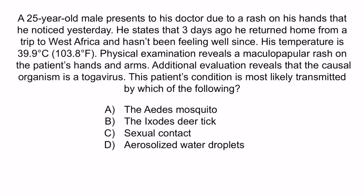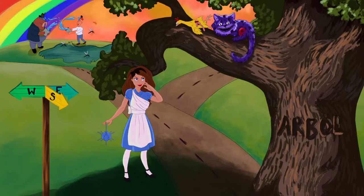Hopefully from the question stem you notice that this patient has a rash, a fever of 39.9 degrees Celsius, and is due to a togavirus. Collectively, these clues should have made you think of chikungunya virus — a togavirus which can cause arthralgias, a maculopapular rash, and a fever. The correct answer is A, the Aedes mosquito. From the image, recall that the mosquitoes are here to help you remember that chikungunya virus, as well as all of the other encephalitis viruses, are transmitted by the Aedes mosquito.